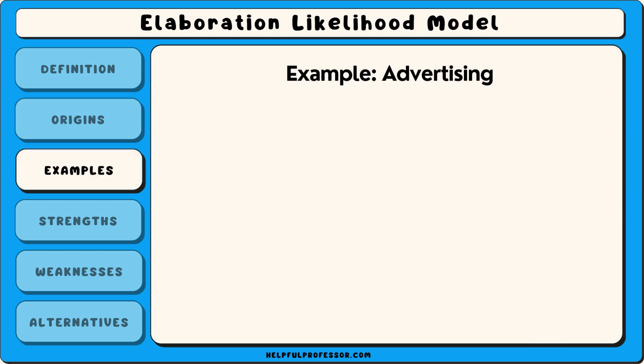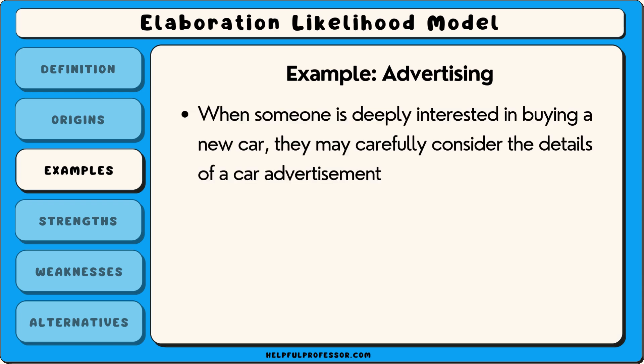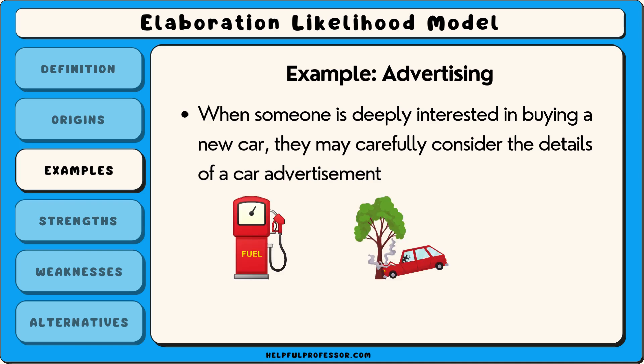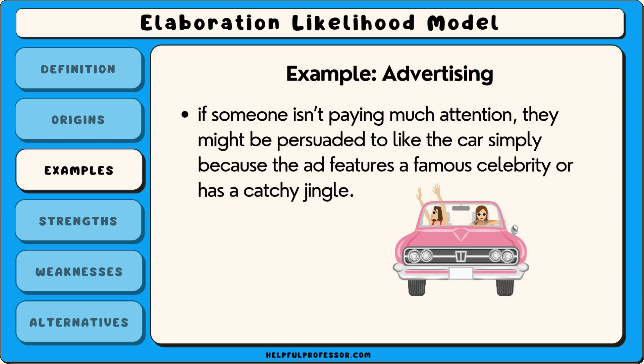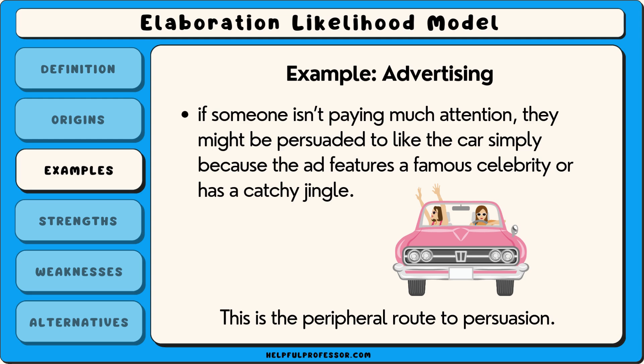An example of the elaboration likelihood model in action is in advertising. When someone is deeply interested in buying a new car, they may carefully consider the details of a car advertisement, like fuel efficiency, safety features, and price — this is the central route to persuasion. On the other hand, if someone isn't paying much attention, they might be persuaded to like the car simply because the ad features a famous celebrity or has a catchy jingle — this is the peripheral route to persuasion.